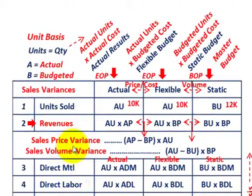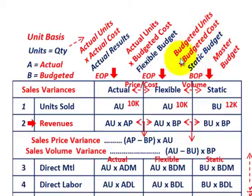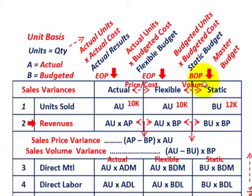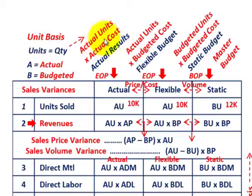Starting out with our budgets: the static budget is our budgeted units for the period times a budgeted cost or budgeted price — everything is budgeted. That's our master budget, established at the beginning of the period. At the end of the period, we determine our actual results, which are our actual units or quantities times the actual cost or actual price.